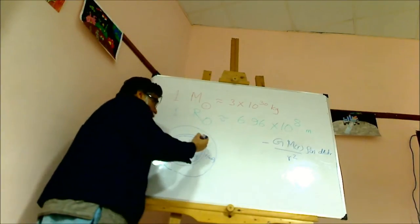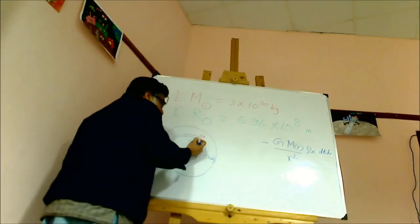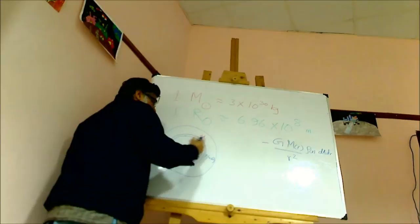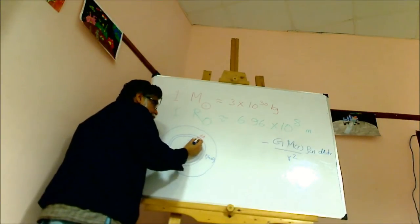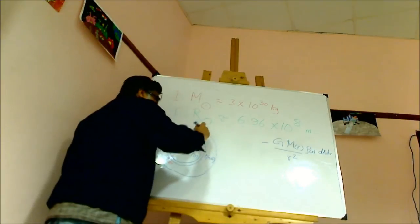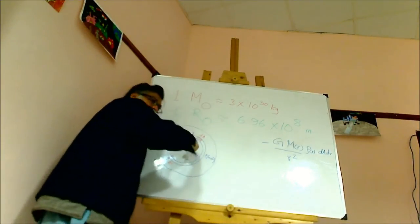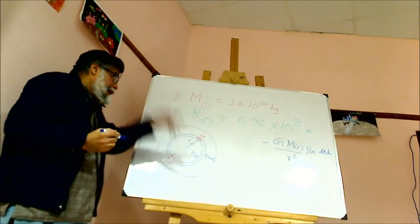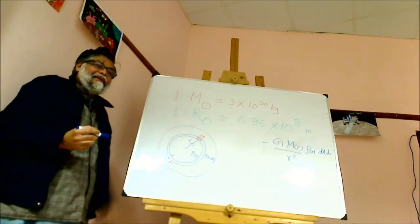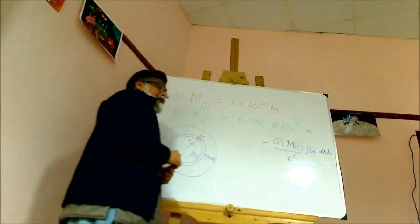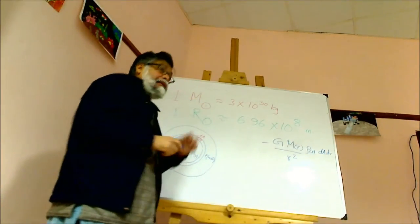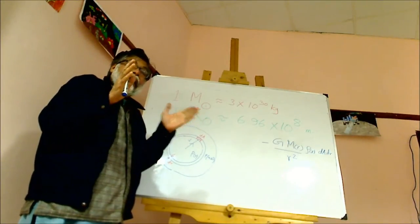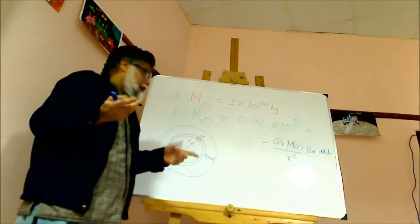But this volume element is feeling at this point the pressure outwards. There is also pressure here, but this volume element is feeling at this point the pressure outwards. So therefore the net force due to pressure is the difference between this and this. Pressure difference times area will give you the force, the difference in pressure.